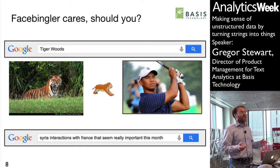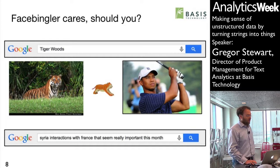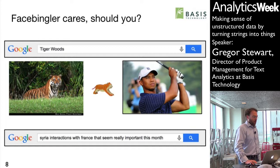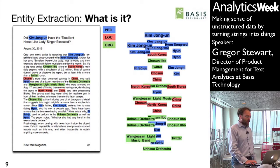However, where it might have a more easily understood benefit is in trying to express a complex information need — for example, the long query 'through interactions with France that seem really important this month.' That's a very complex set of search criteria, and people do type this kind of thing in. So at the very least, trying to resolve the things that are in that request would be a start.